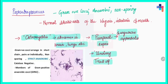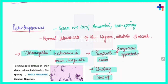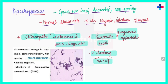The first bacterium we will discuss is Peptostreptococcus. It is a gram-positive coccus which is a non-sporing anaerobic bacterium. These Peptostreptococcus are normal inhabitants of the vagina, intestines, and mouth. The gram-positive cocci are arranged in short chains, sometimes in pairs like diplococci, and sometimes individually.